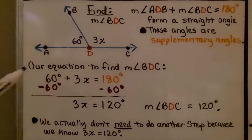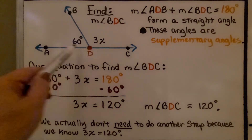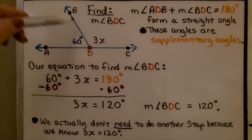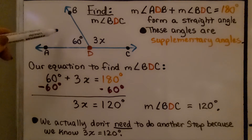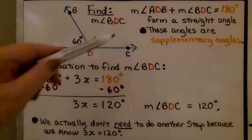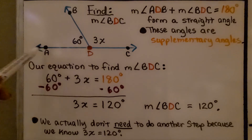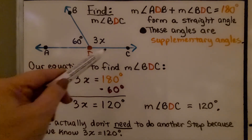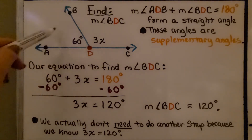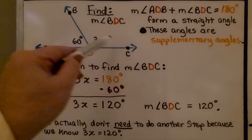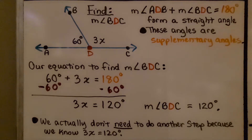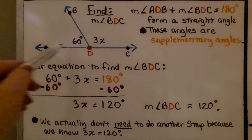Take a look at this diagram. We've got ADC going straight across here, and we've got a ray coming up as the side of this angle and the side of this angle. We need to find the measure of angle BDC. We can see this is 60 degrees and this is 3x degrees. This is a straight line, and the measure of angle ADB plus the measure of angle BDC is equal to 180 degrees — they form a straight angle.